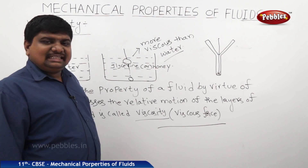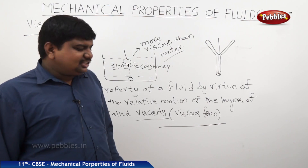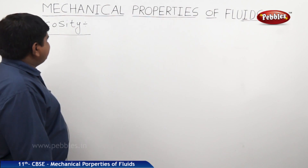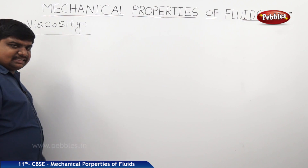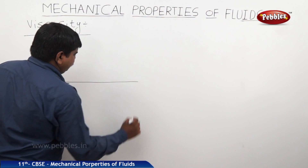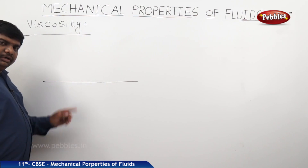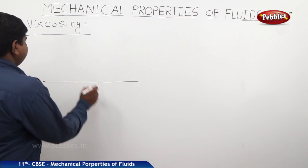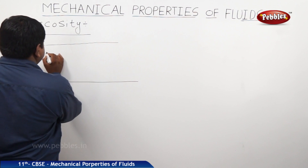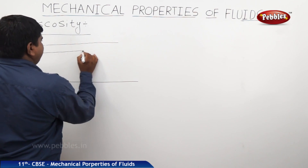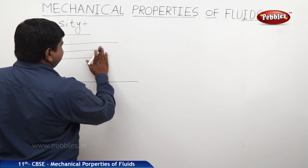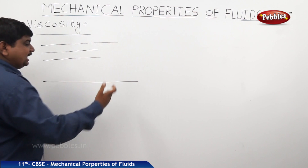Now we will see the expression for viscosity. Consider a surface on which some fluid is flowing from one end to the other. Assume this fluid contains n number of elements — nothing but layers.